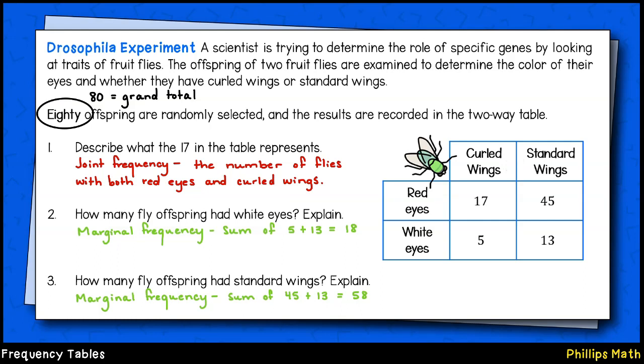How many offspring had white eyes? Well, that's a marginal frequency of 5 plus 13, which is going to be 18 flies. How many fly offspring have standard wings? That's another marginal frequency. That'll be 45 and 13, which sum to give 58 flies.